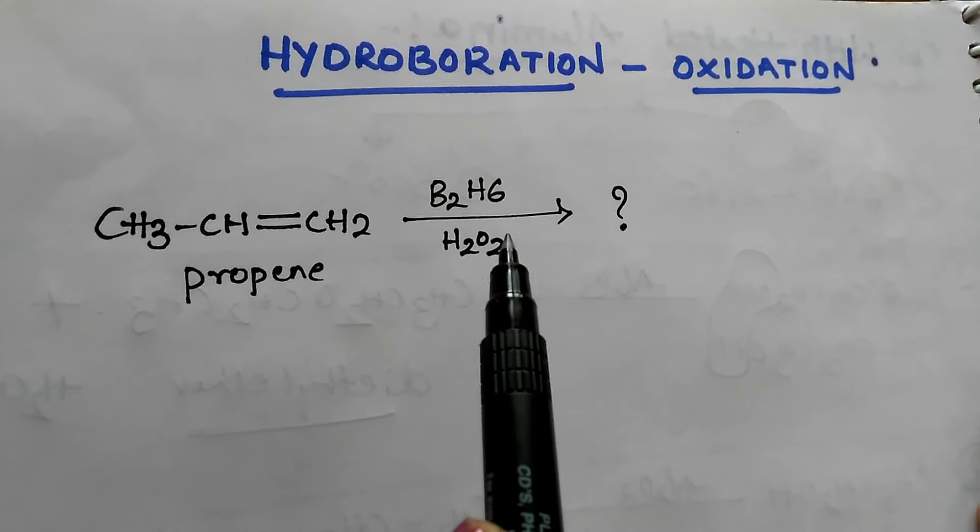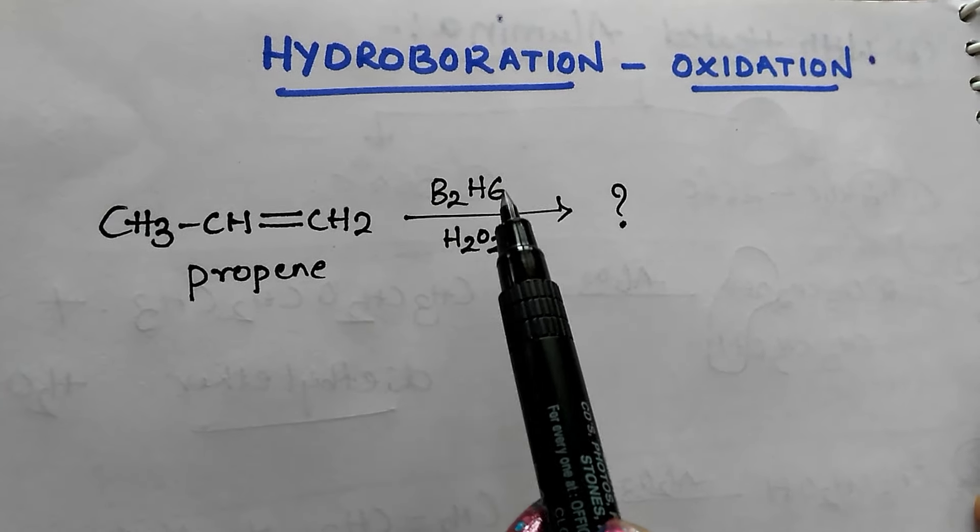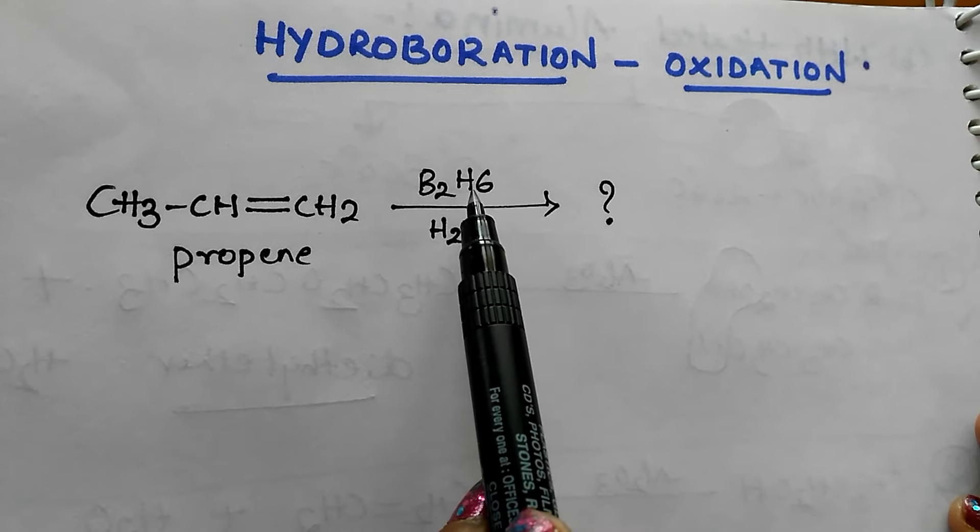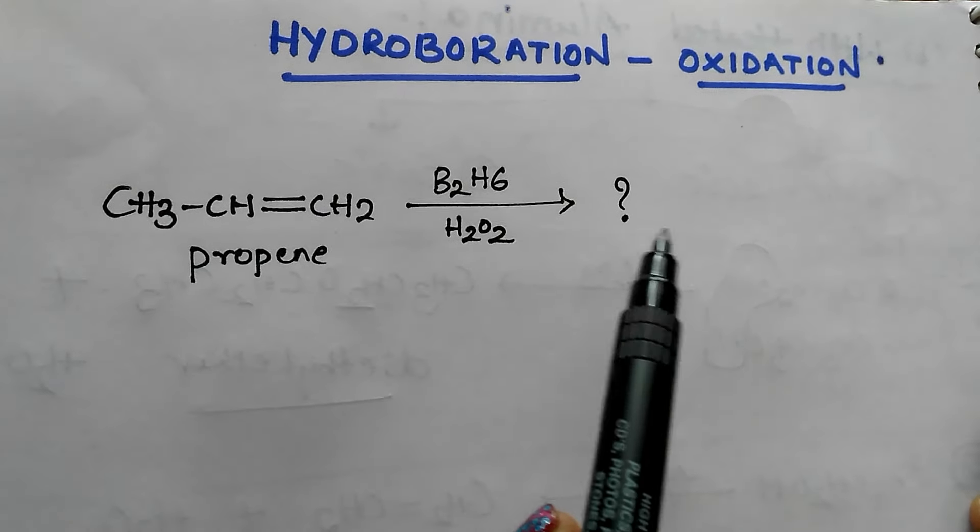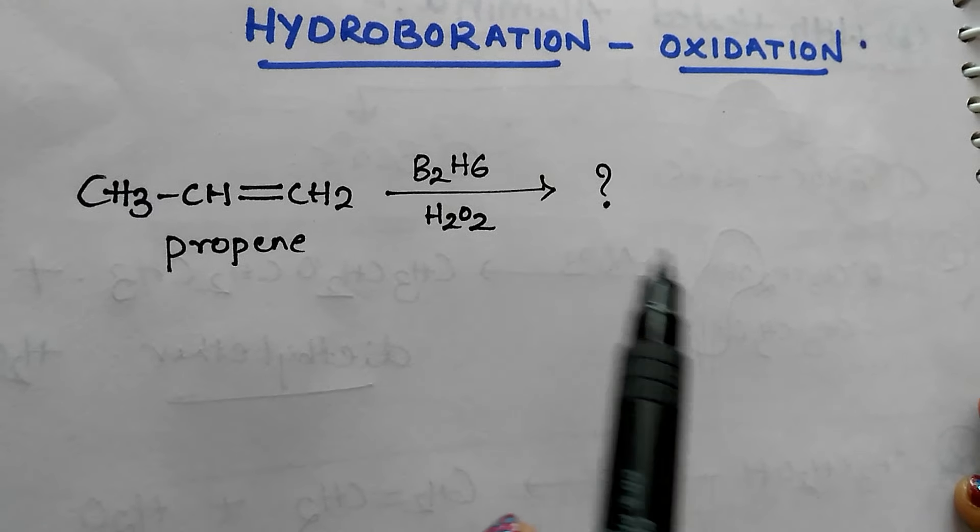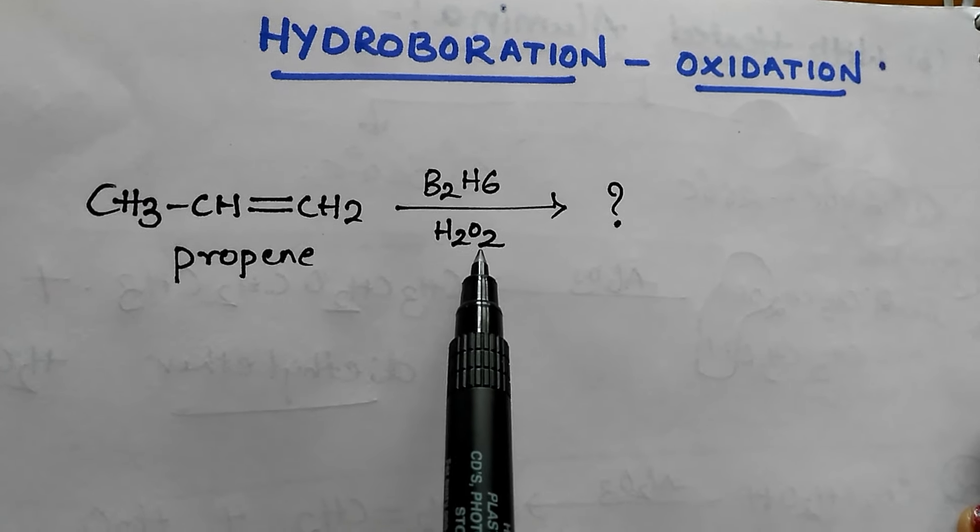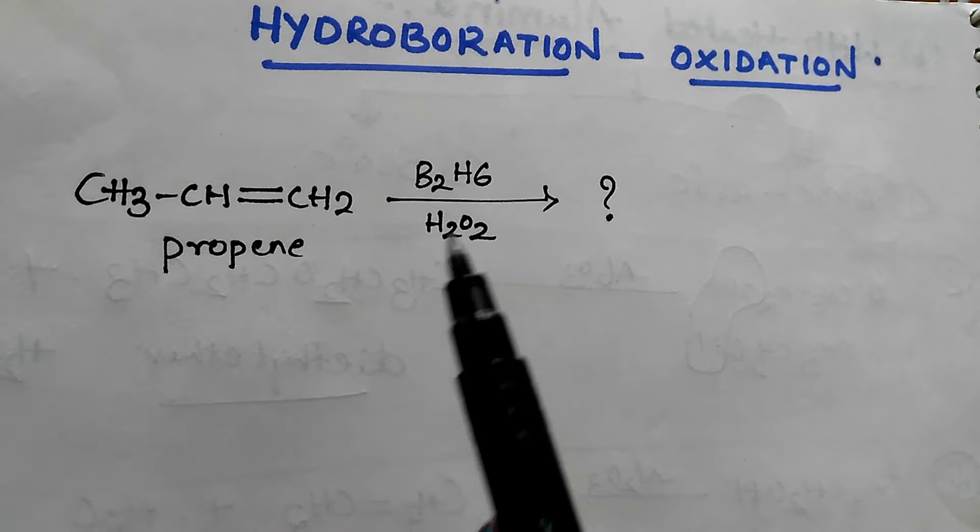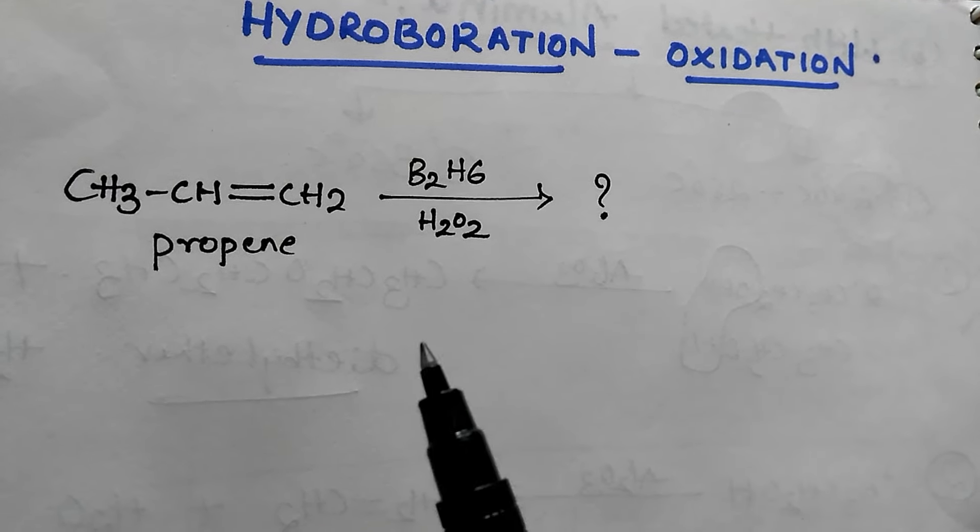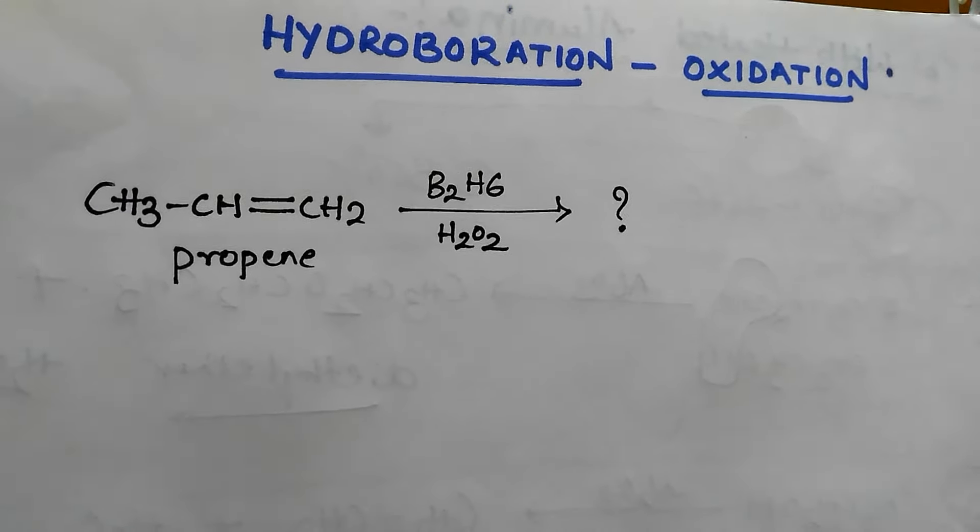Generally diborane is an electron deficient molecule. This acts as an electrophile which reacts with alkene and it forms trialkyl boranes, which upon subsequent oxidation with H2O2 will give alcohols. That is the general process. Now I am not going to discuss the mechanism, I am going to discuss the trick for this reaction.